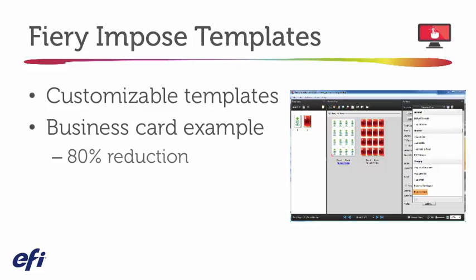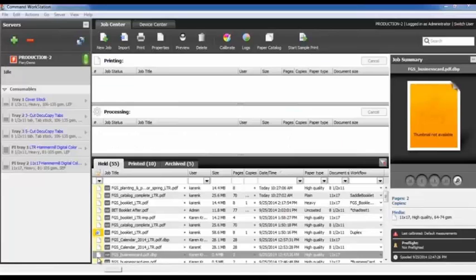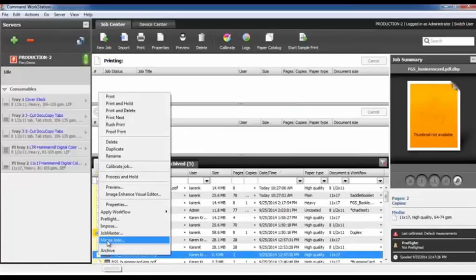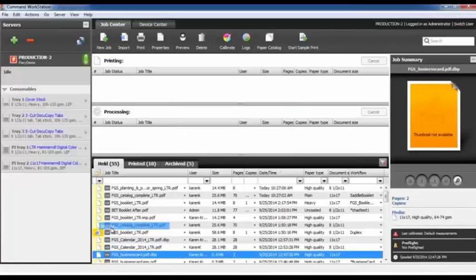After you save your new template, you can quickly apply it in Impose the next time you open a job, or apply it into automated workflows. Let's take a look at how you can create your Impose template and save it into a preset. I'm going to use a business card that I've already imposed to show how we can save that template for future use.